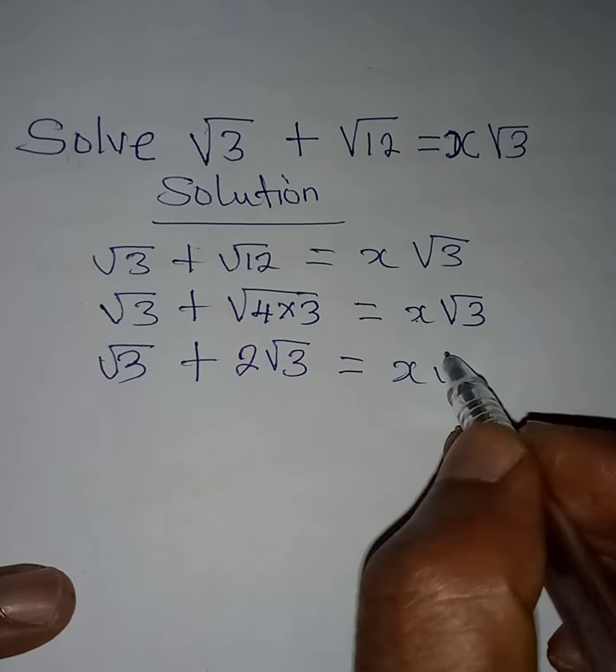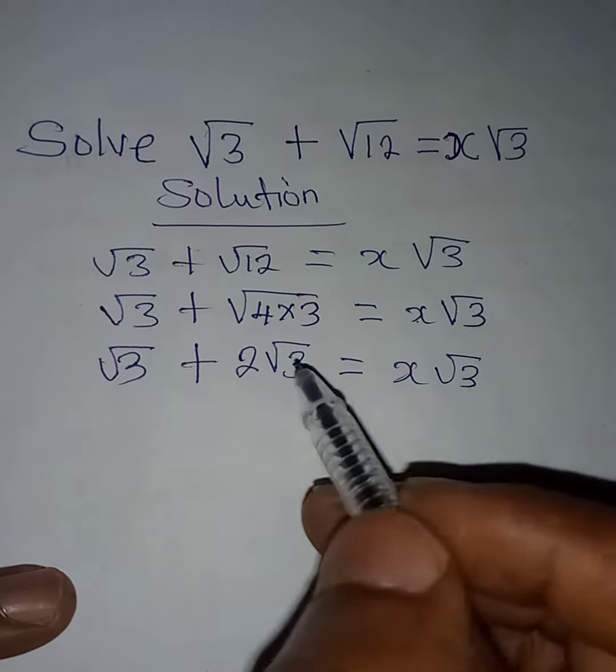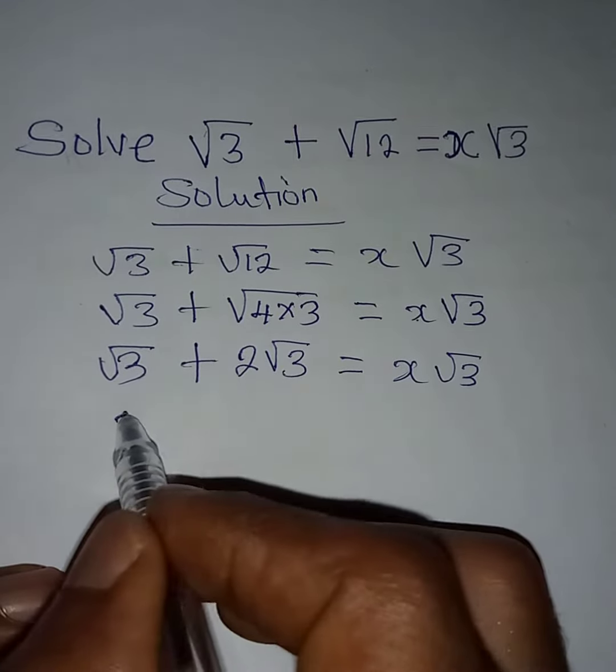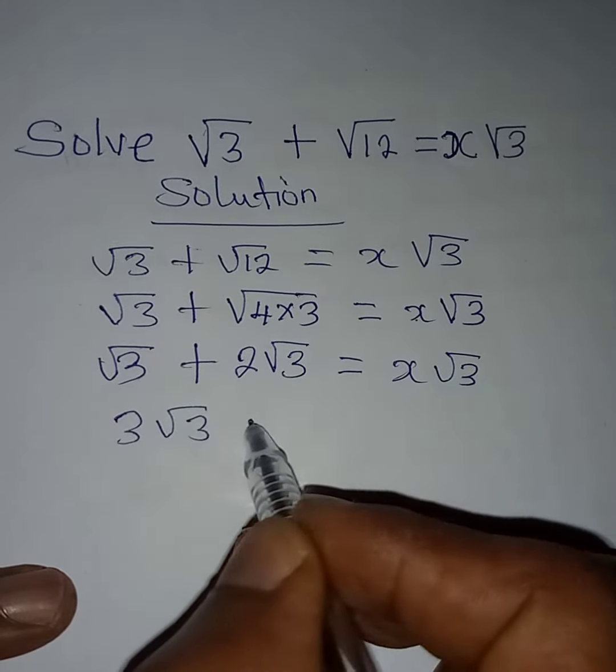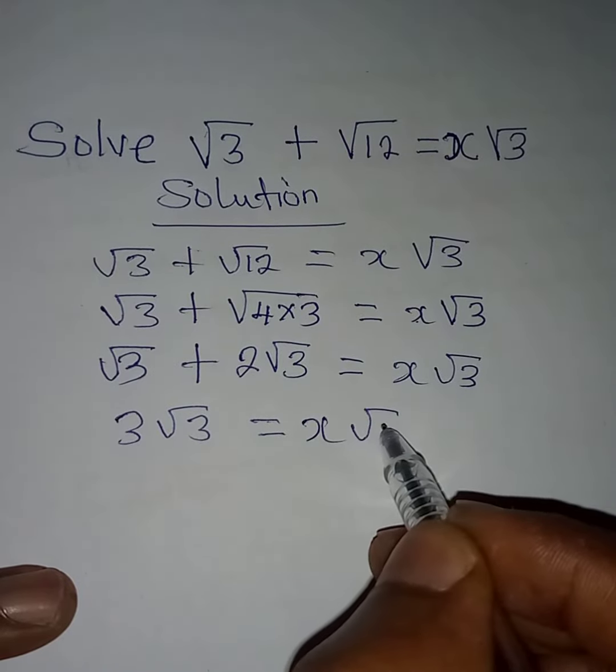Now 1√3 plus 2√3 will give us 3√3, and then this is equal to x√3.